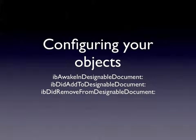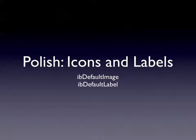There is an Interface Builder integration category declared on your object when working with the plugin. In this category, you can declare operations like IBAwakeInDesignableDocument and IBDidRemoveFromDesignableDocument, which are called appropriately when you drag and drop or remove objects from the library. This is an opportunity for one-time configuration of your object when it gets added in — and these methods never get called by consumers of your class.